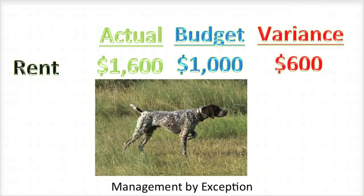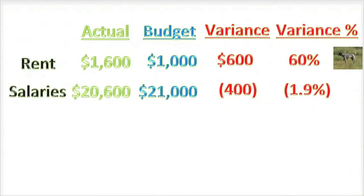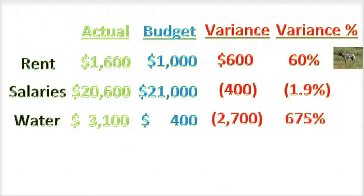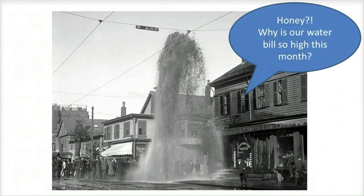When managers control using a management by exception system, they focus much of their attention on determining why certain actual results fall outside a narrow band around the budgeted results. Management will generally act upon significant variances from plan and ignore insignificant ones. However, what is considered significant varies by management team. In companies striving for zero defects, even the smallest variances will be acted upon. Variance analysis can also help you manage your own finances — for instance, discovering a home water leak when both the water bill and heating bill were significantly higher than budgeted.